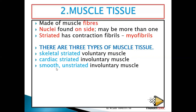Number three: smooth, unstriated, involuntary muscles. Smooth means they don't have stripes — just smooth. They are also involuntary, meaning you don't have control over them. You can find them in the digestive system. When food goes down the oesophagus, you cannot bring it back. Even if you are upside down, it still moves — you don't have control over it.